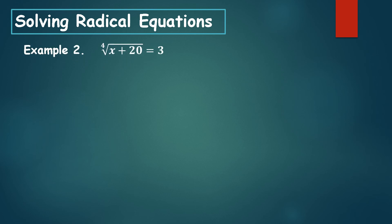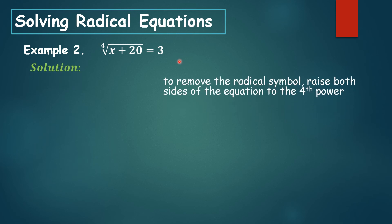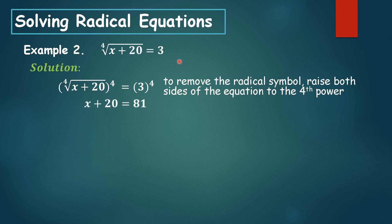Example number 2: the fourth root of the sum of x and 20 is equal to 3. To remove the radical symbol, place both sides of the equation to the fourth power. This will cancel the index and the exponent, giving x plus 20. Three to the fourth power is 81, because you multiply four threes: 3 times 3 times 3 times 3 equals 81.